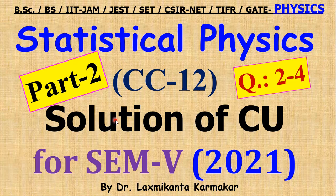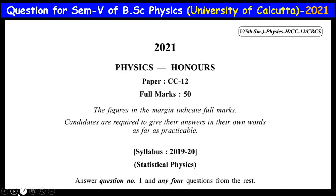Hello, welcome everyone. This video is Part 2 of the solution for Statistical Physics CC-12 paper for the year 2021 at Calcutta University, Question Paper 5. You can see the total question paper of 2021 from the University of Calcutta via the description link.